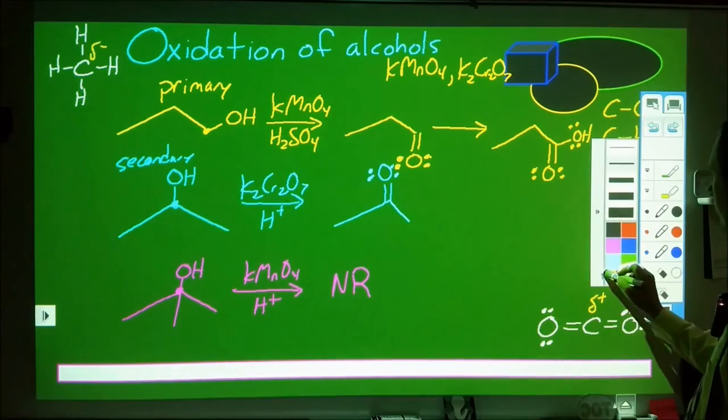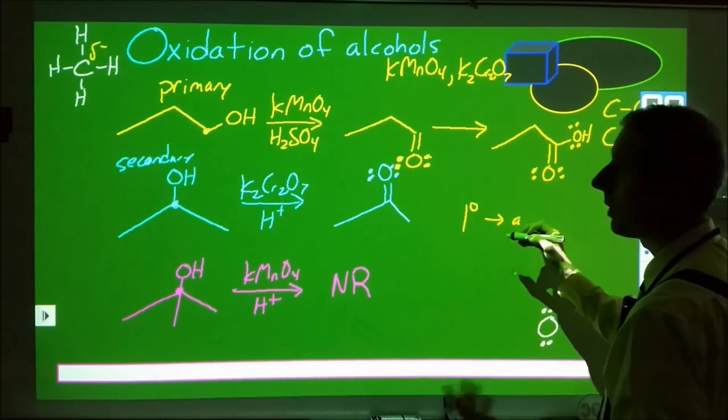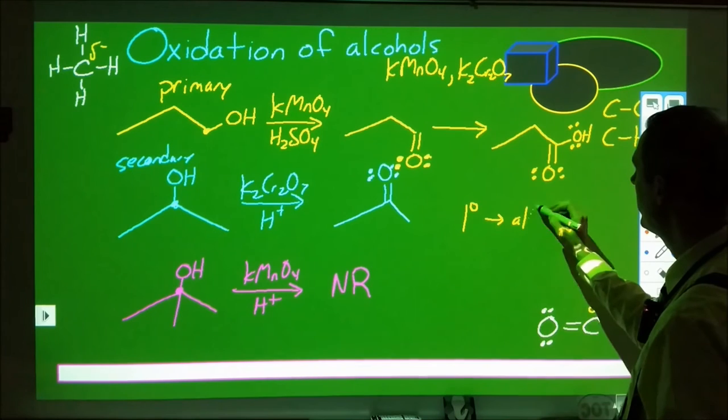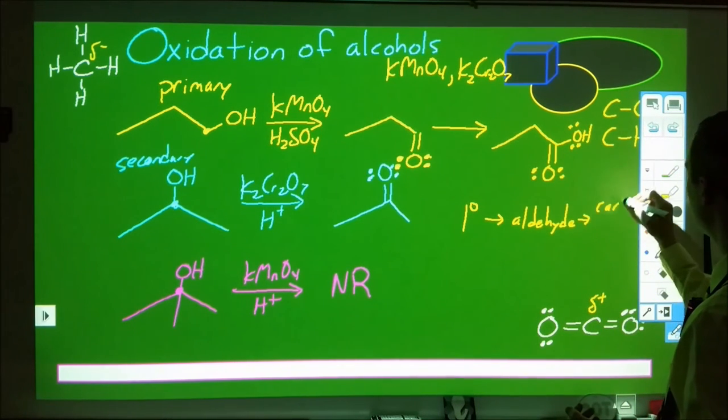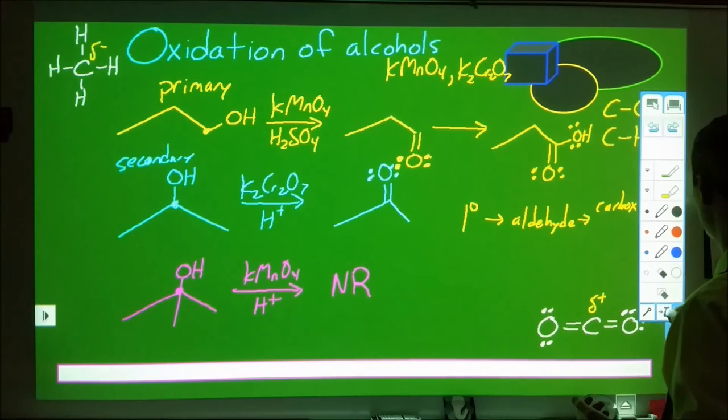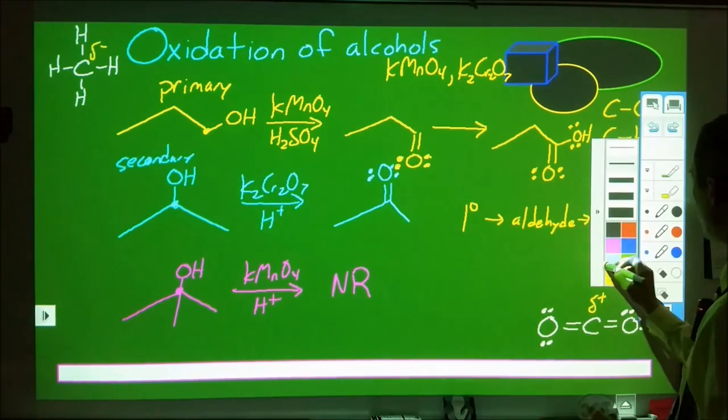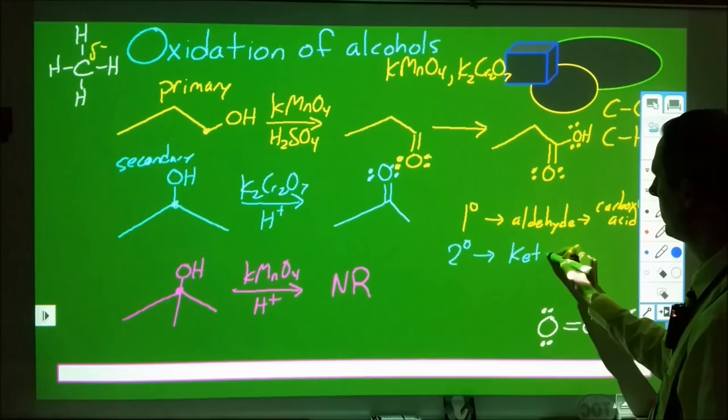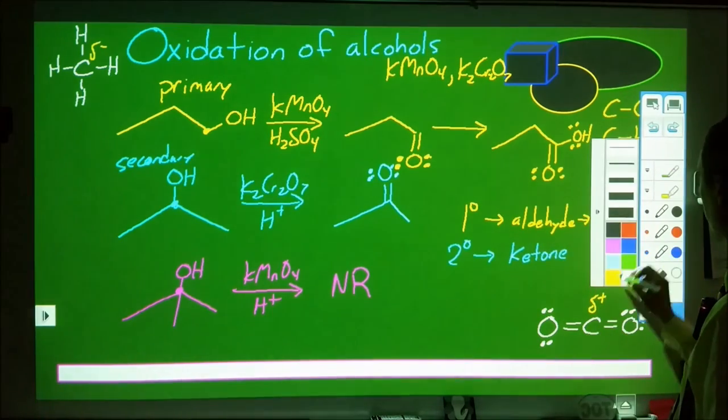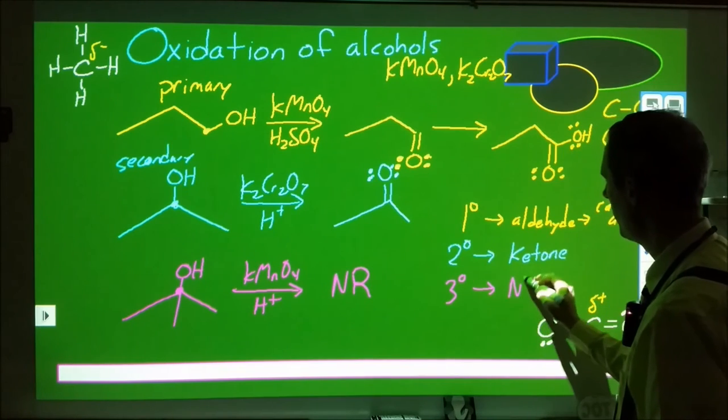To summarize: if you have a primary alcohol, you're going to turn that into an aldehyde, which can further turn into a carboxylic acid. If we have a secondary alcohol, that's going to turn into a ketone. And if we have a tertiary alcohol, there's going to be no reaction.